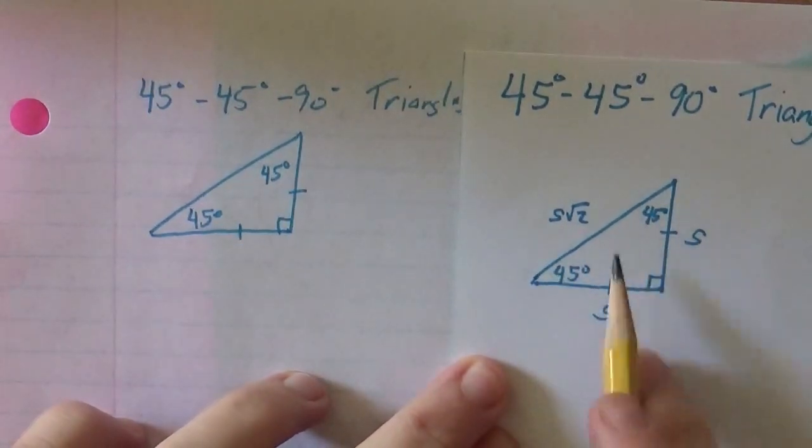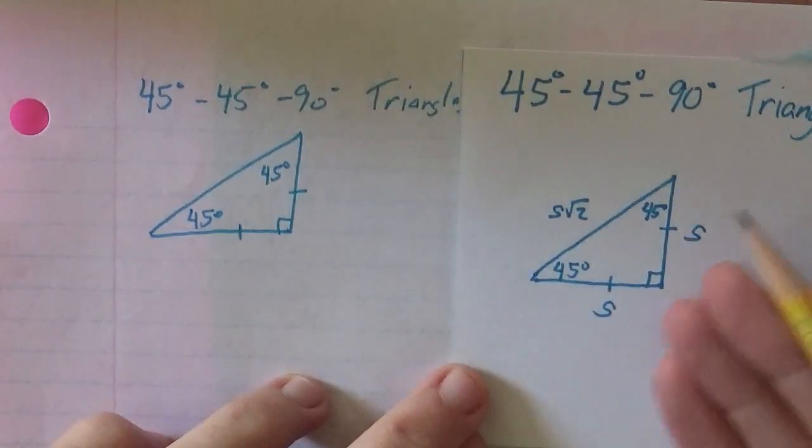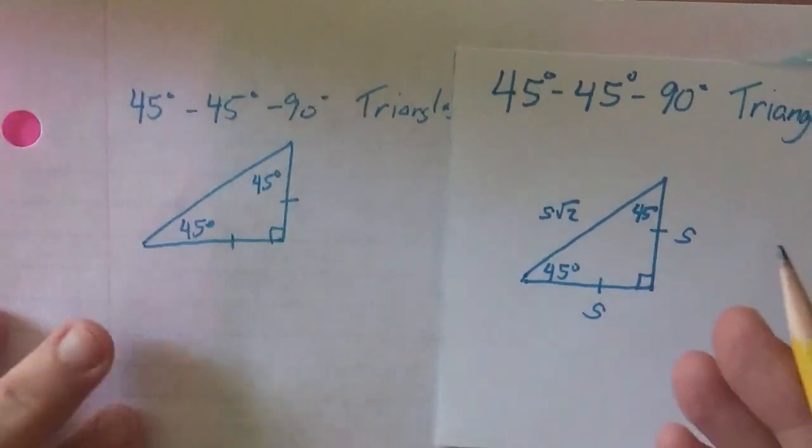So the 45-45-90 ratios are pretty nice to explain. You almost don't need to memorize it because it comes directly from the Pythagorean Theorem. We only do it to make things faster because they come up a lot.